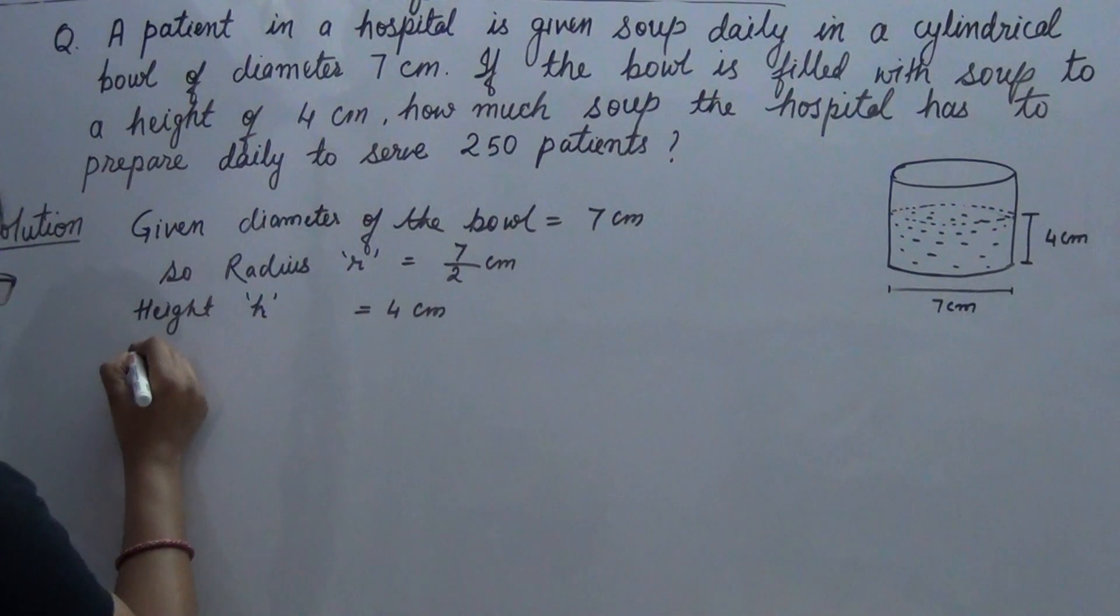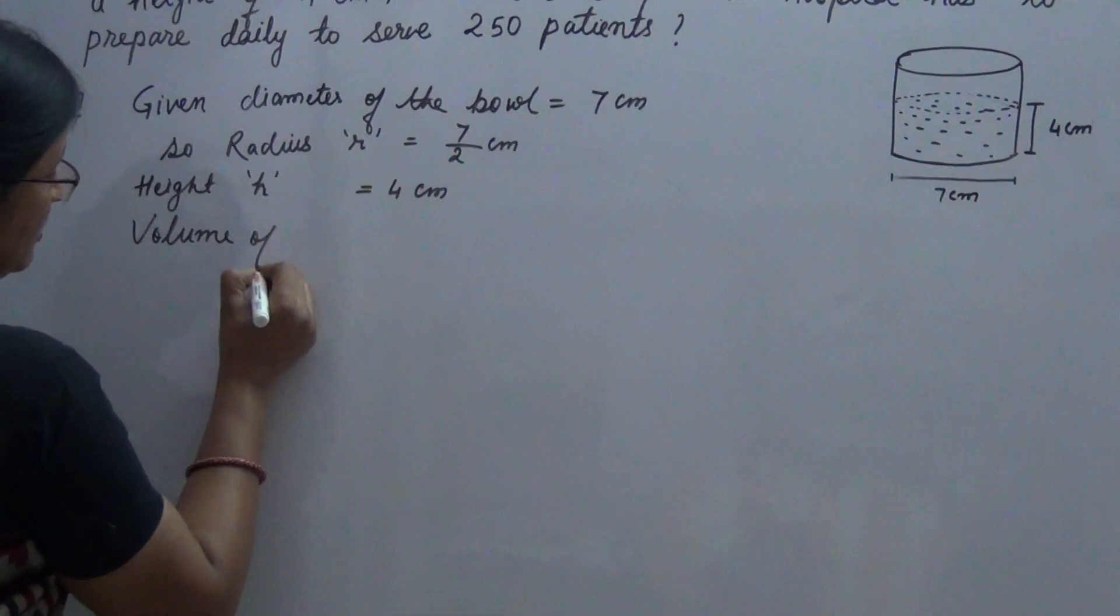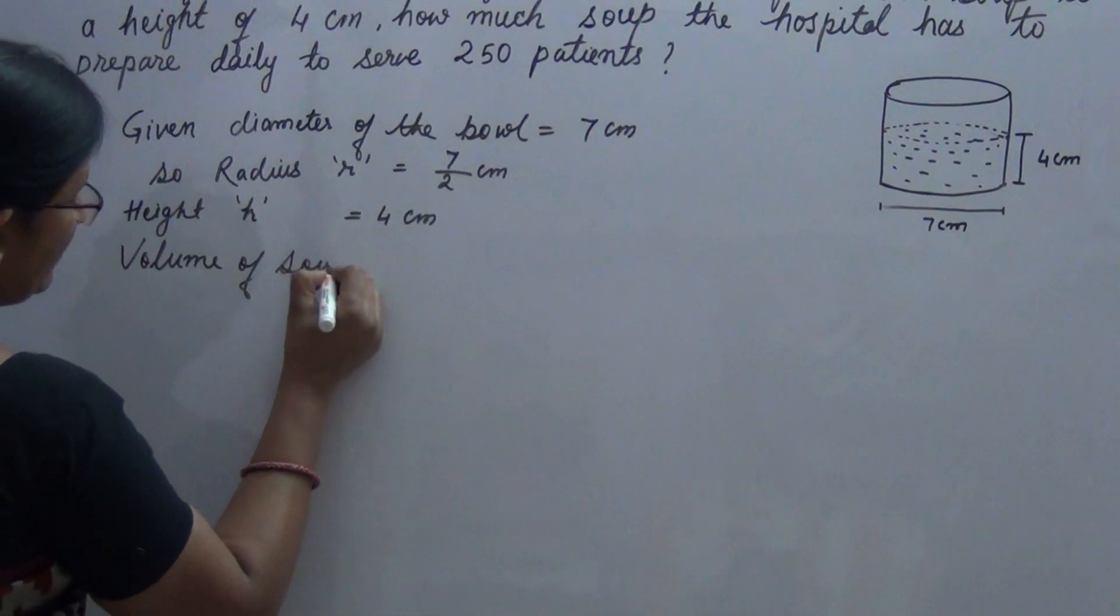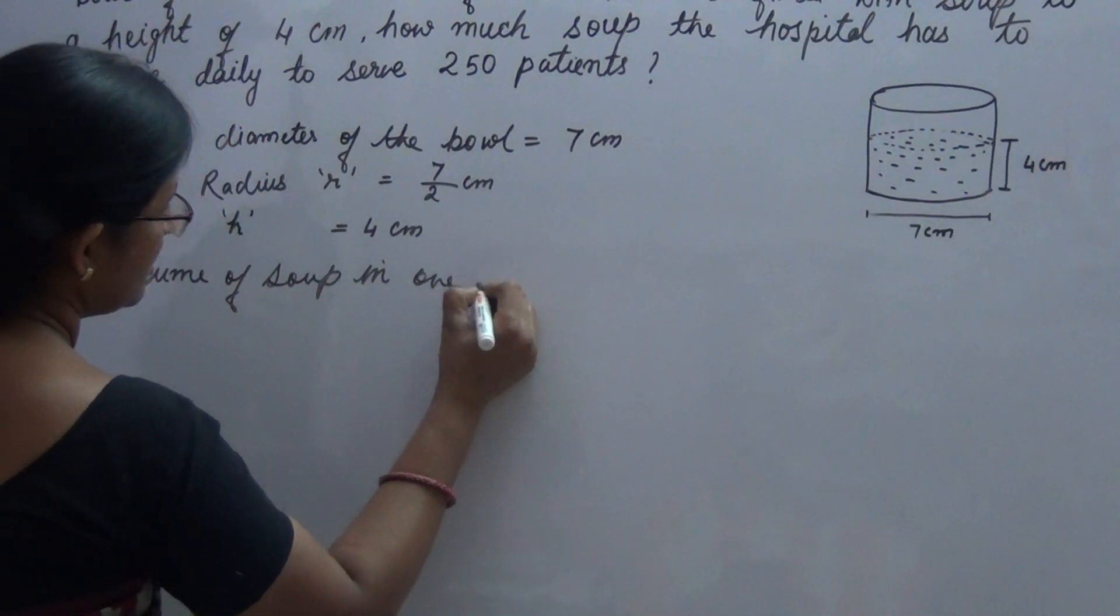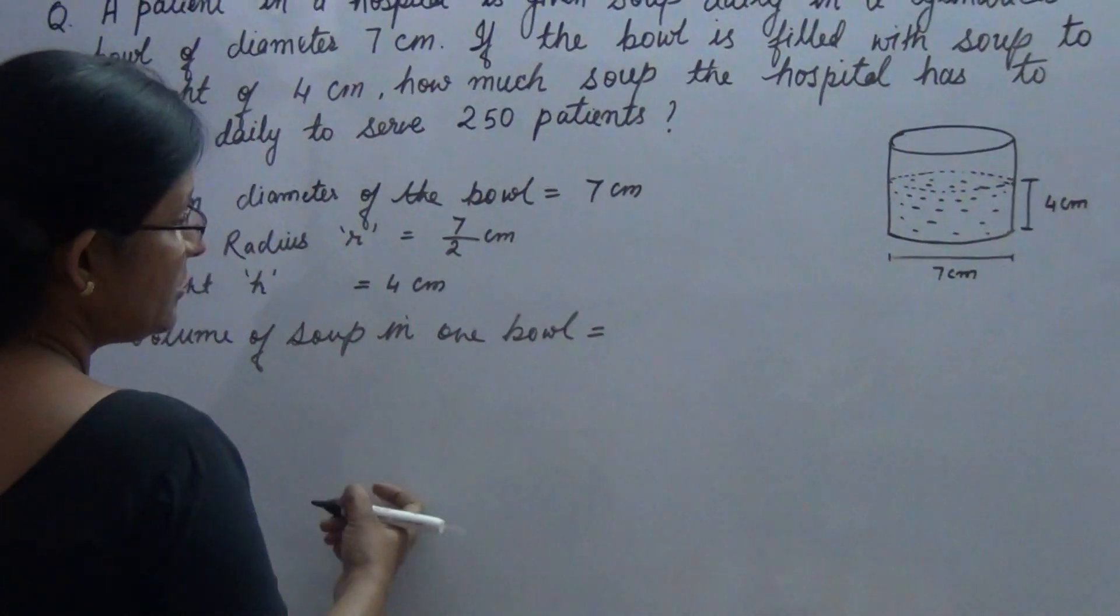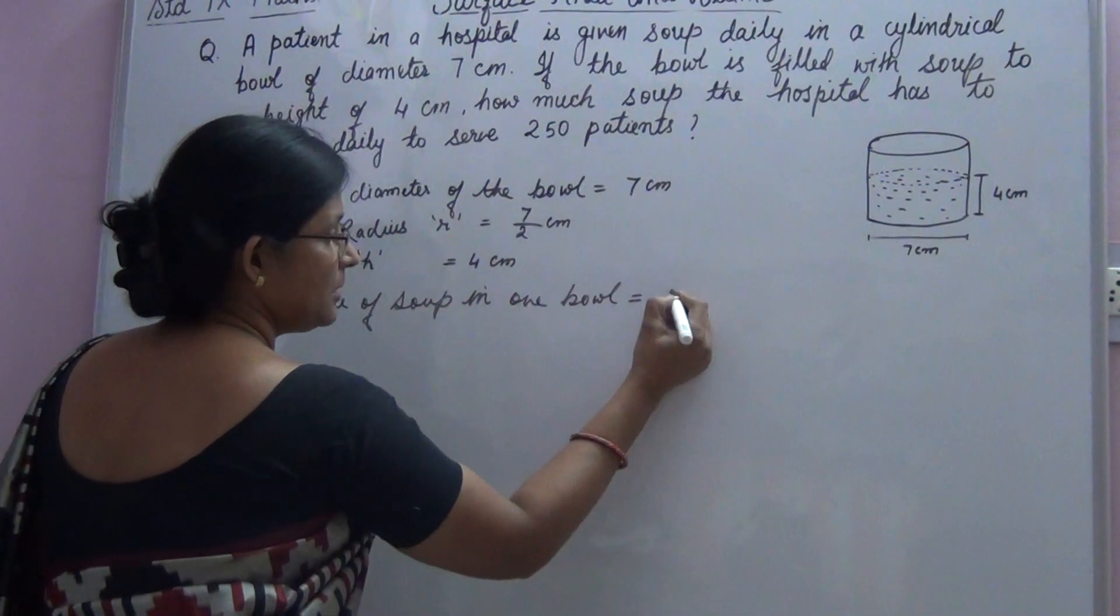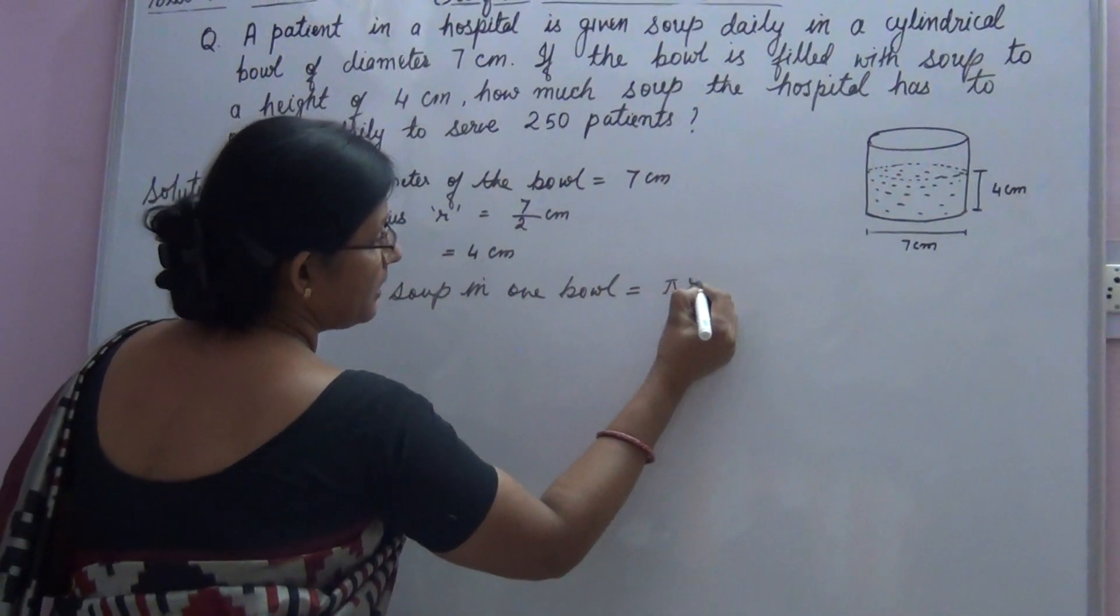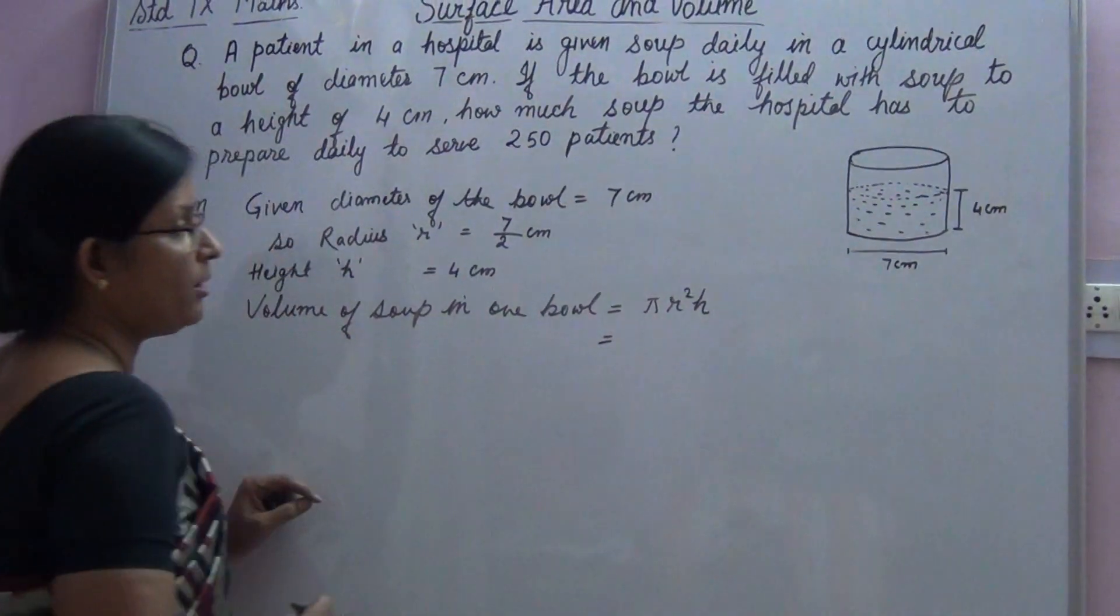Now, volume of soup in one bowl. We need to find a volume. The formula for finding volume, as you know, is pi r square h. This is the volume of cylinder.